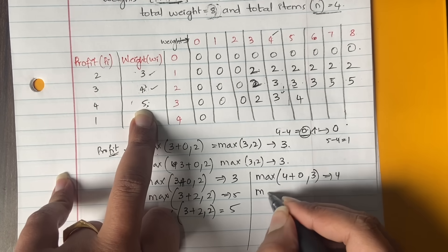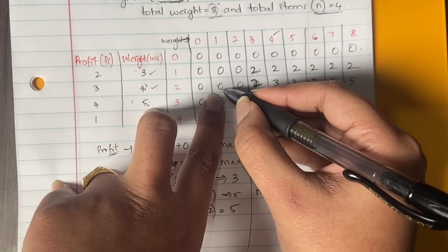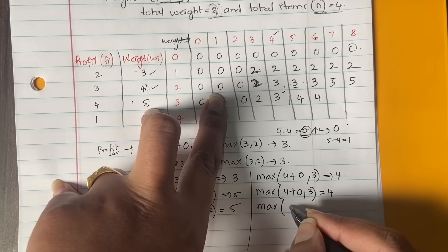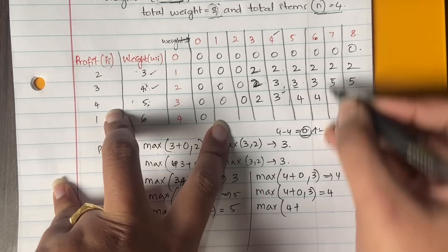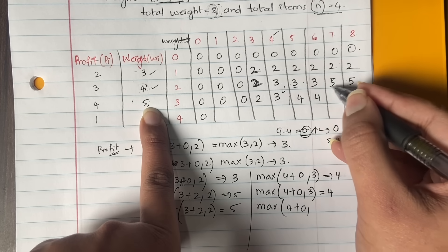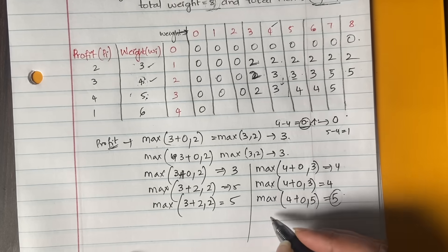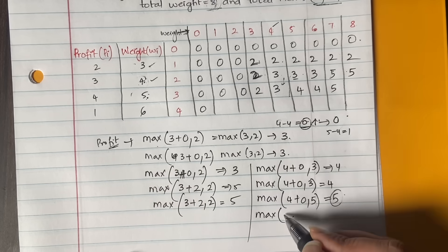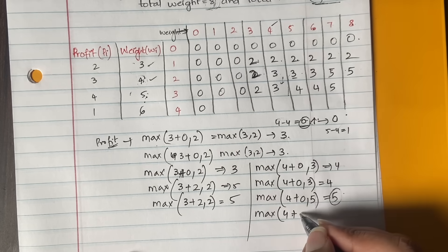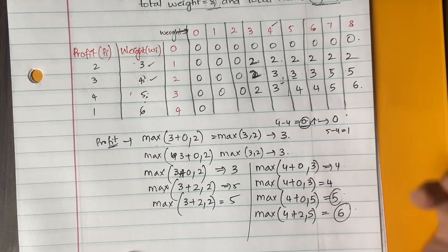For column 8: max(4 + row_above[8−5], row_above[8]) = max(4 + row_above[3], 5) = max(4+2, 5) = max(6, 5) = 6. So row 3 values are: 0, 0, 2, 3, 4, 4, 5, 6.